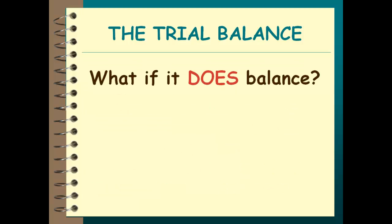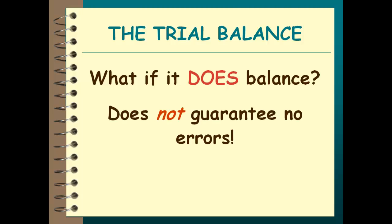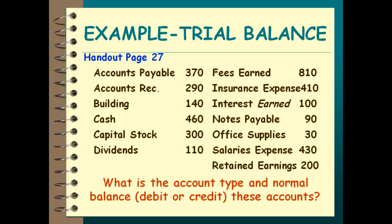What if the trial balance does balance? That's a good sign, but does it guarantee that everything is correct? No. For example, what if I forgot to post a transaction — I didn't post the debit and I didn't post the credit? Would my trial balance still balance? Yes. What if I posted an entry twice — posted the debit twice and the credit twice? I'd still balance. What if I debited cash but accidentally posted it as a debit to accounts receivable? I'd still balance — it was a debit, just posted to the wrong account. So just because I balance doesn't guarantee that I made no mistakes. If I don't balance, it's guaranteed that I have a mistake.